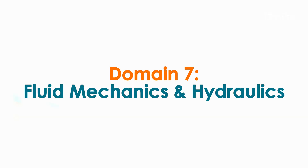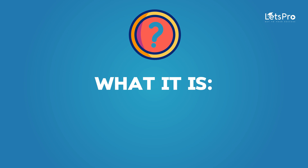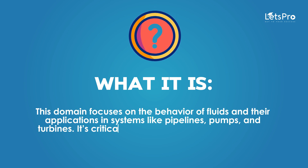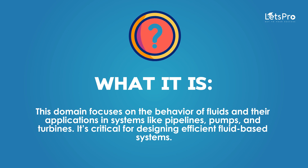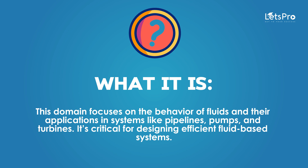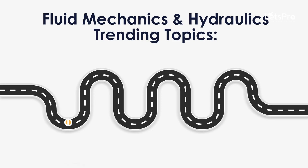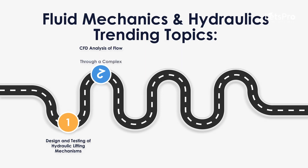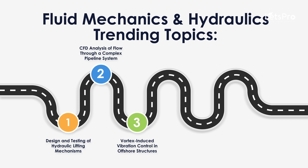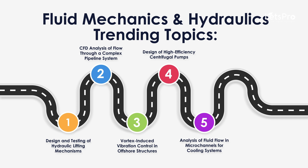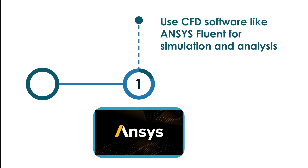Domain 7: Fluid Mechanics and Hydraulics. This domain focuses on the behaviour of fluids and their applications in systems like pipelines, pumps and turbines. It's critical for designing efficient fluid-based systems. Trending topics include: design and testing of hydraulic lifting mechanisms, CFD analysis of flow through a complex pipeline system, vortex induced vibration control in offshore structures, design of high efficiency centrifugal pumps, and analysis of fluid flow in microchannels for cooling systems.